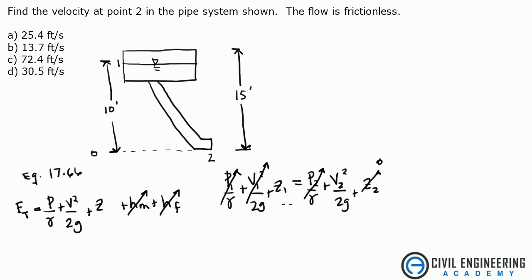So all we need to do is solve this equation. Basically you would get z1 minus z2, all times by 2g, equals velocity 2 squared.